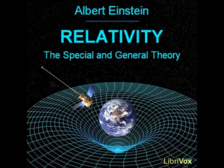Its results hold only so long as we are able to disregard the influences of gravitational fields on the phenomena, for example, of light. Since it has often been contended by opponents of the theory of relativity that the special theory of relativity is overthrown by the general theory of relativity, it is perhaps advisable to make the facts of the case clearer by means of an appropriate comparison. Before the development of electrodynamics, the laws of electrostatics were looked upon as the laws of electricity. At the present time, we know that electric fields can be derived correctly from electrostatic considerations only for the case, which is never strictly realized, in which the electrical masses are quite at rest relatively to each other and to the coordinate system.